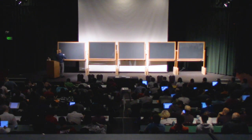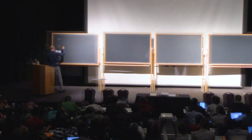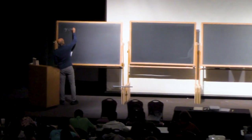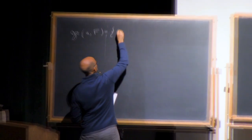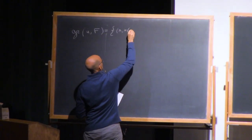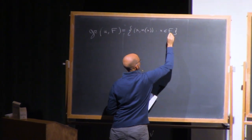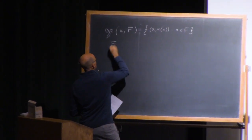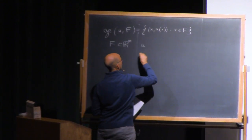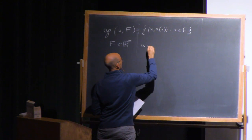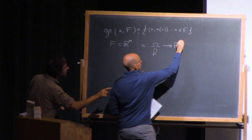We are going to look at area minimizing graphs. Let me set up a little bit of notation. We will use this notation for the graph of a function u — this will be the set of points (x, u(x)) such that x is in a certain domain f. Here f will usually be some subdomain of R^n, and for our purposes u from some omega which contains f into R^n will always be a Lipschitz function.